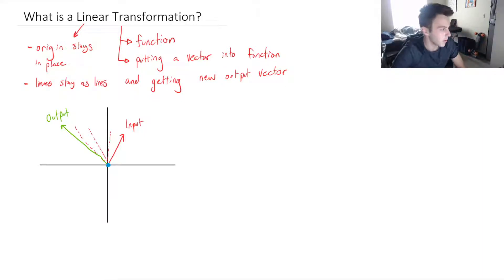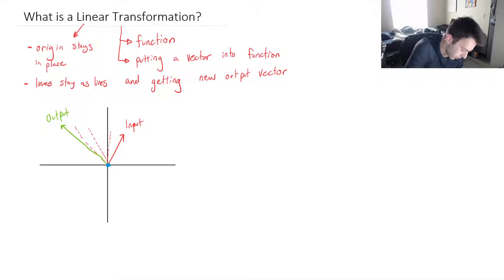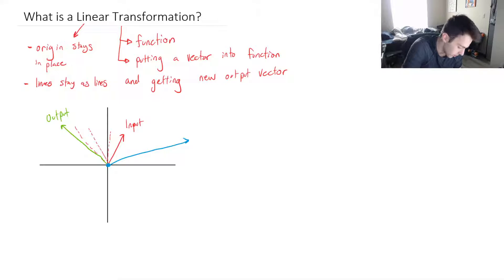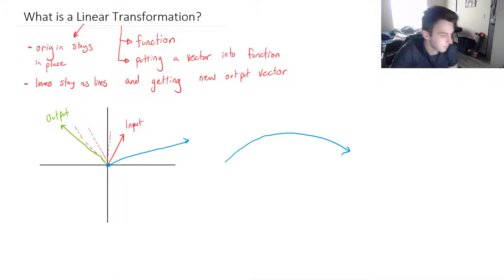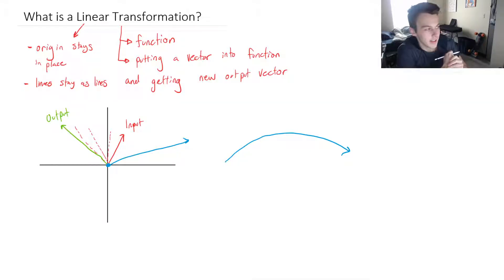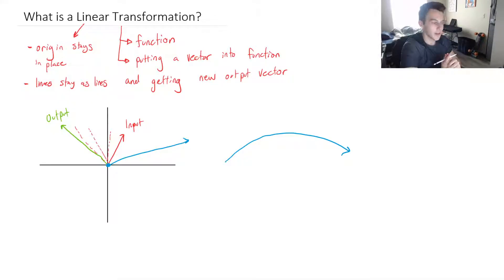Let me show you what I mean. Let's say we have some input vector drawn in blue that looks like this. If I were to transform it and now this vector is bent or curved, that is not a linear transformation — because I'm bending it, it's not linear. You could probably guess that from the name: linear — it's got to stay as lines.